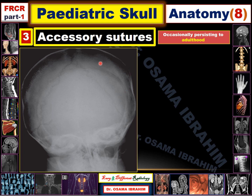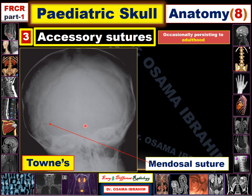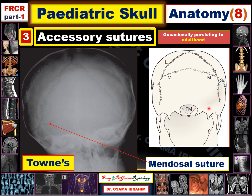The third accessory suture, occasionally persisting into adulthood, is called the Mendoza suture. In the Towne's view — where the orbit is not clearly seen — sutures extend medially from the lambdoid suture on both right and left sides. This medially extending suture is the Mendoza suture, which extends from the lambdoid suture posteriorly and medially. It can be seen in both the Towne's and anteroposterior views extending medially, and in the lateral view it appears extending posterior to the lambdoid suture. The Towne's view also shows the foramen magnum.